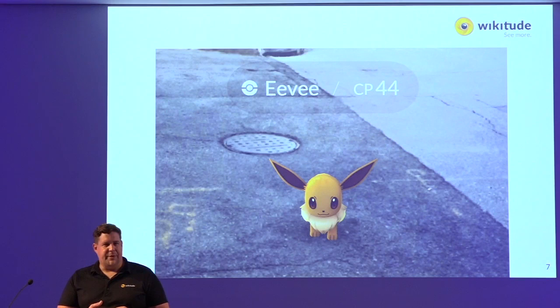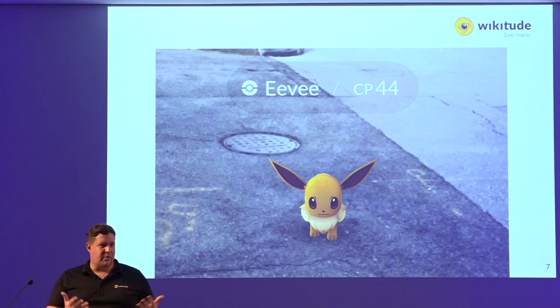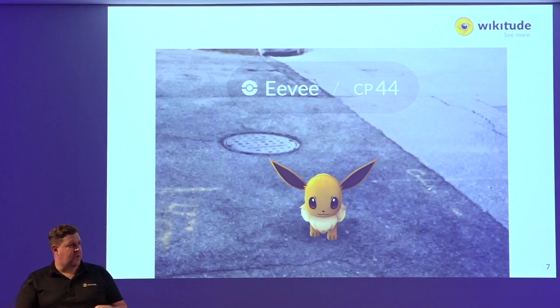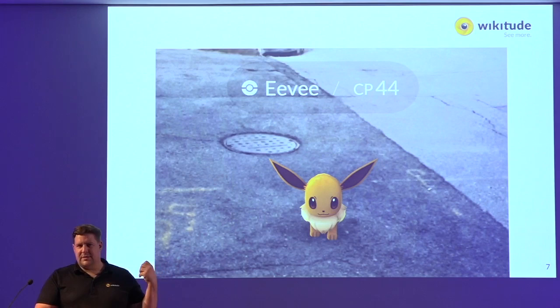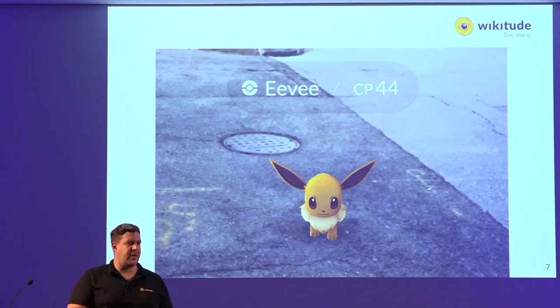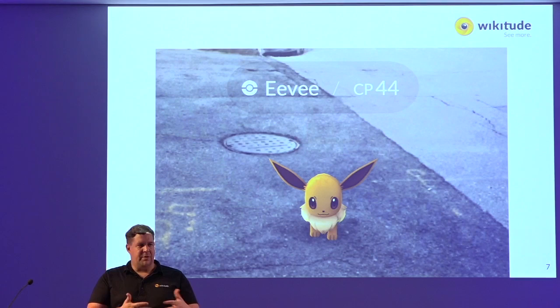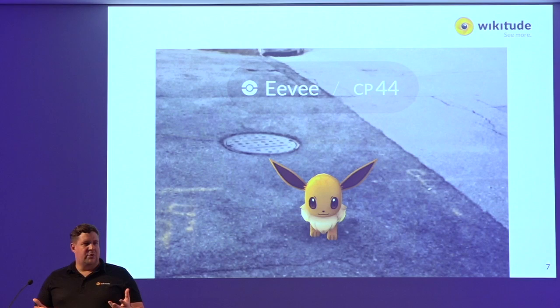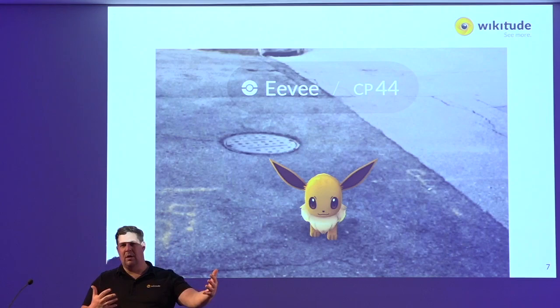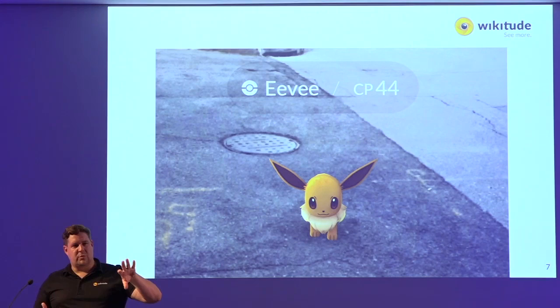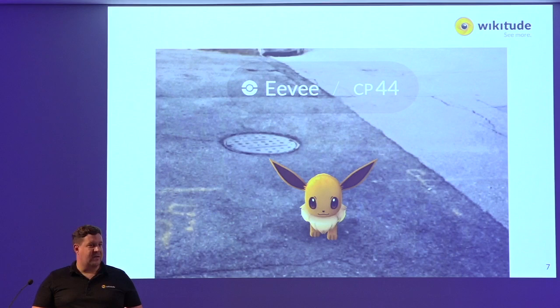Look at Pokémon Go. It uses GeoAR — GPS sensors to locate yourself, then you go to PokéStops and grab Pokémons. But this is a poor man's wizard trick in a way — it has nothing to do with the reality there. The Pokémon sits in your field of view but does not interact with your surroundings at all. Think of Pokémon Go if it could really interact with the PokéStops: if a PokéStop were a statue or a wall and the application had a sense of that, and the Pokémons interacted with the physical environment — that would be a whole different game.